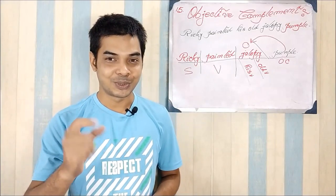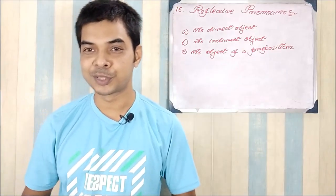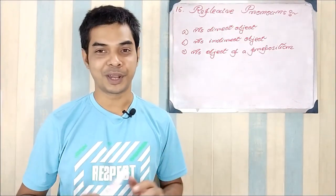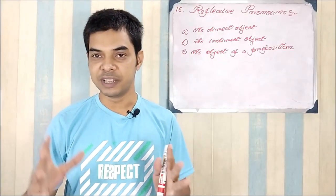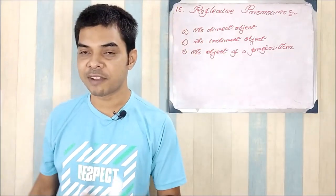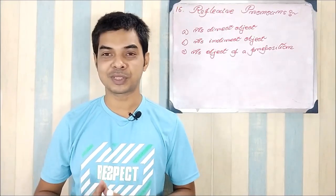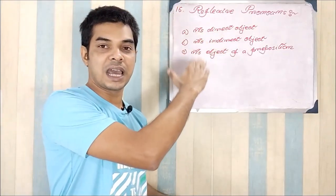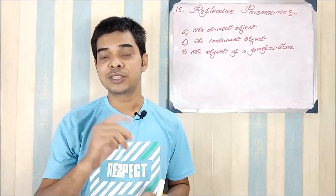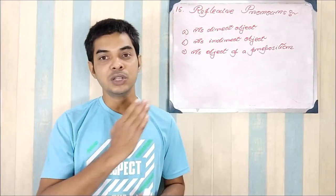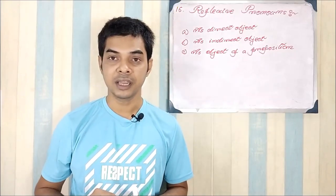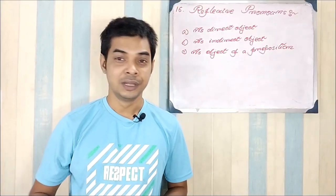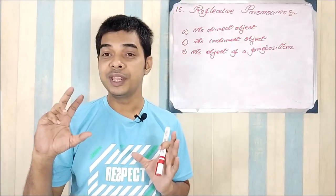Rule 16 covers reflexive pronouns. This is not a single rule but a combination of three, because reflexive pronouns can be used as objects in three different ways: as a direct object, as an indirect object, and as the object of a preposition. We will diagram each of these three uses separately, one after another.